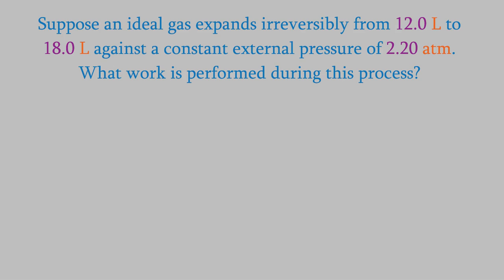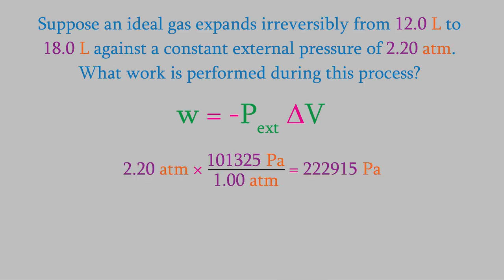Suppose an ideal gas expands irreversibly from 12.0 liters to 18.0 liters against a constant external pressure of 2.20 atmospheres. What's the work performed in this process? We'll use this equation. It's pretty simple. The only thing we need to do is convert the units so that we get the work in joules. First, remember that an atmosphere is equal to 101,325 pascals. So, we'll convert P_external to pascals. Next, remember that there are 1,000 liters in a cubic meter, which gives us 6.00 times 10 to the minus 3 cubic meters for our volume. When we solve the equation, we get negative 1337.5 joules for the work.